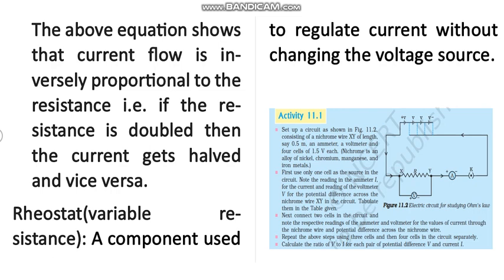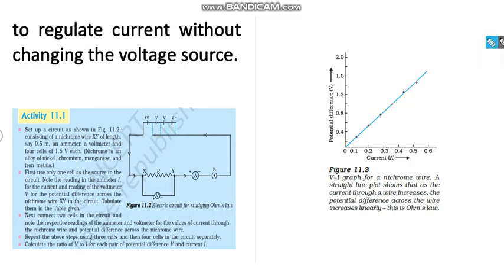After noting down the readings, you calculate the ratio V upon I. When you plot a potential difference versus current graph, you observe a straight line graph. For example: 0.4 divided by 0.1 equals 0.4; 0.8 divided by 0.2 equals 0.4; 1.2 divided by 0.3 equals 0.4. The values are the same, confirming a straight line plot.